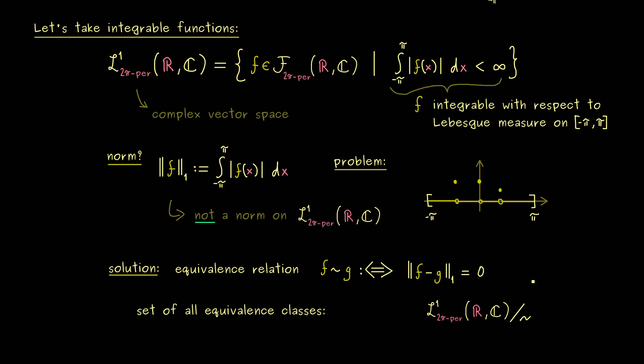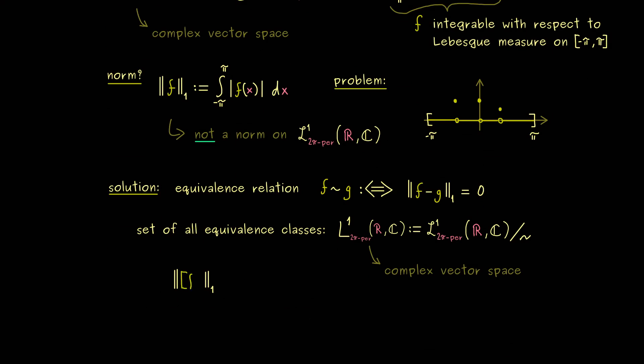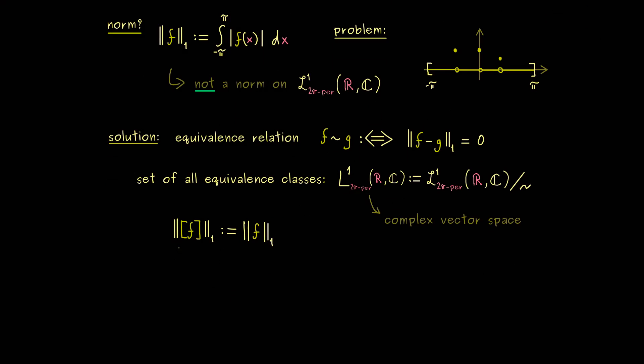Then what we get in the end is the set of all equivalence classes, usually denoted with such a quotient. It's not hard to see that this result gives us a complex vector space again. This one we also denote with L1, but now we don't use the curved script L anymore. So you could say, this is now the actual vector space we want to have. The good thing is, that here we actually have a norm now. The only thing we have to do is to define the norm of an equivalence class. This is not so hard - if f lies in the equivalence class, we just define it by using the norm of f. This is well-defined, because if we take another function from the equivalence class, we already know that they coincide in the integral sense. More precisely, the only difference happens on a set with measure zero. Therefore, the value of the integral that comes out here will be the same.